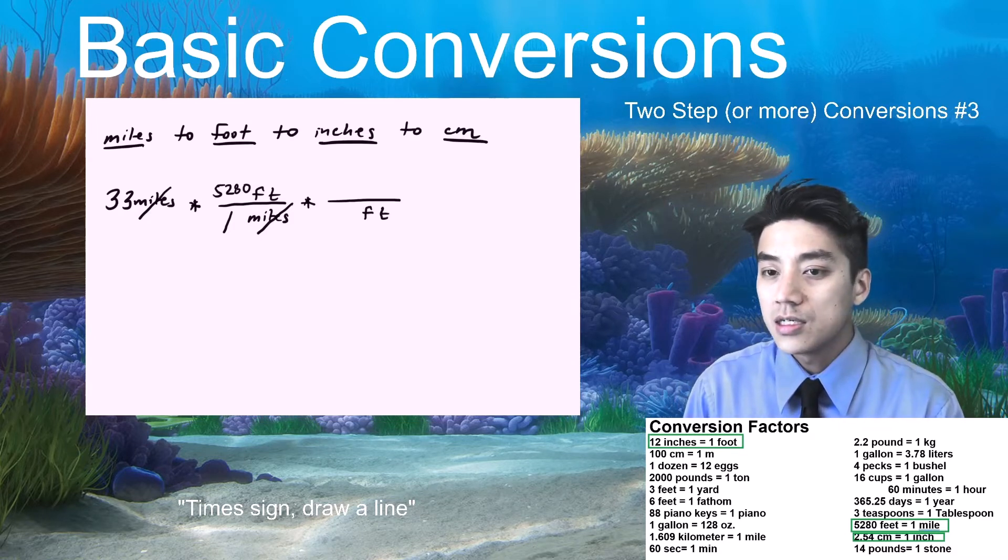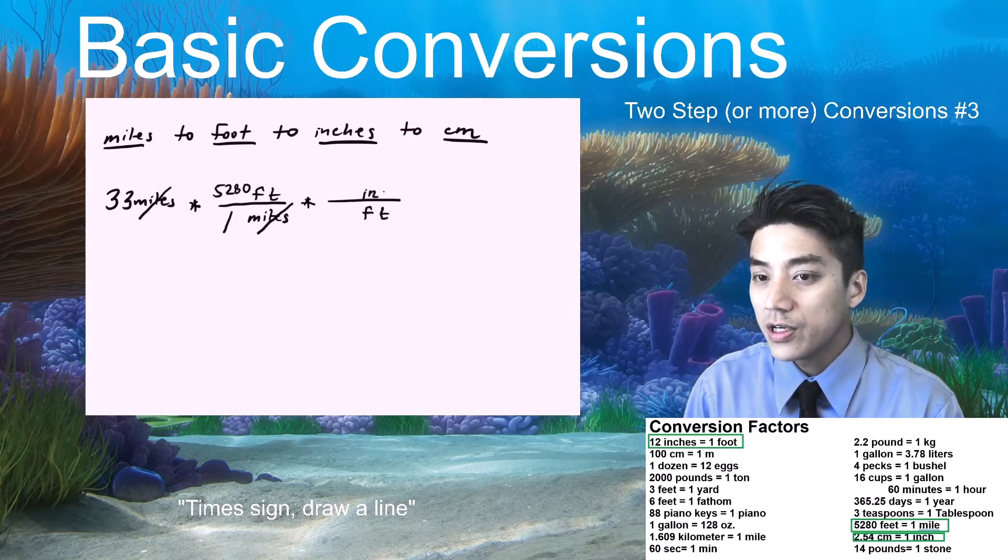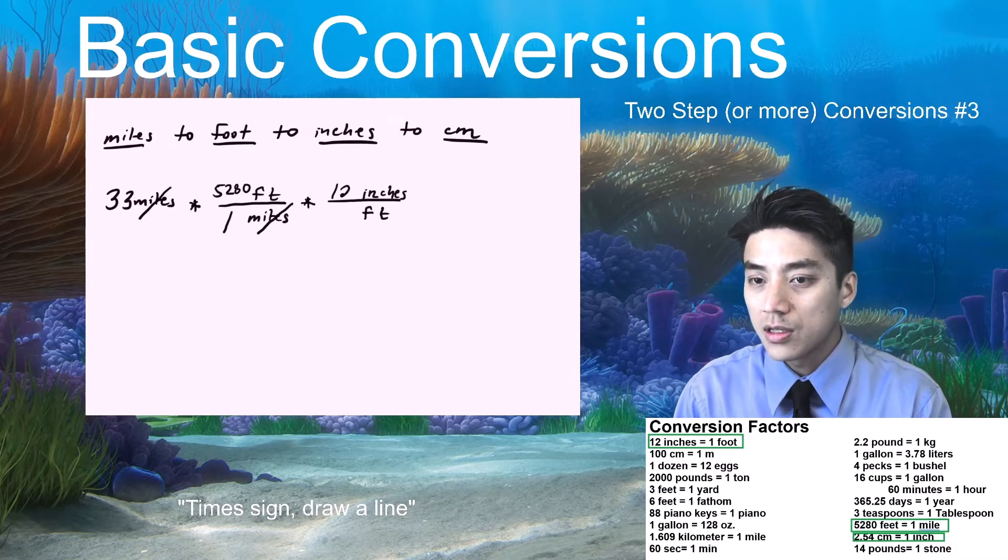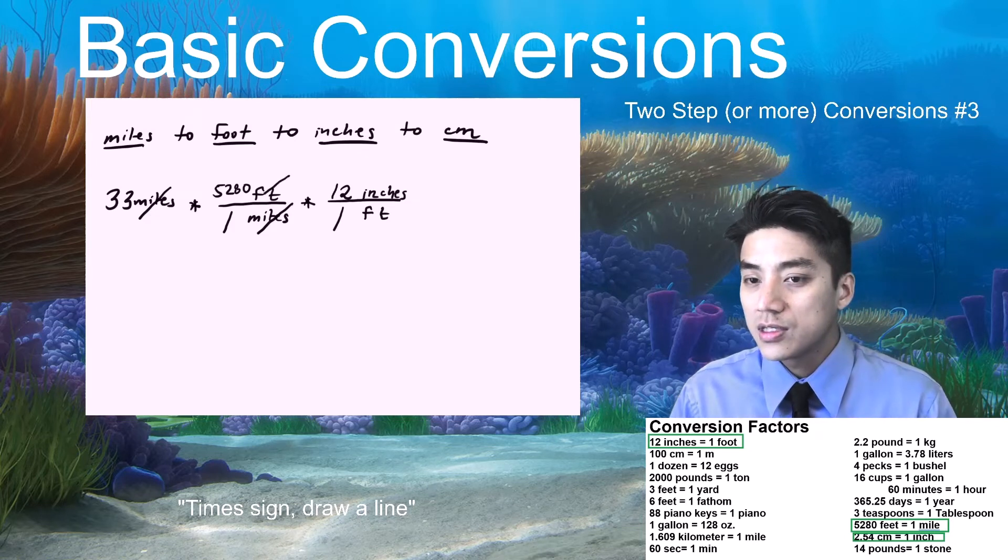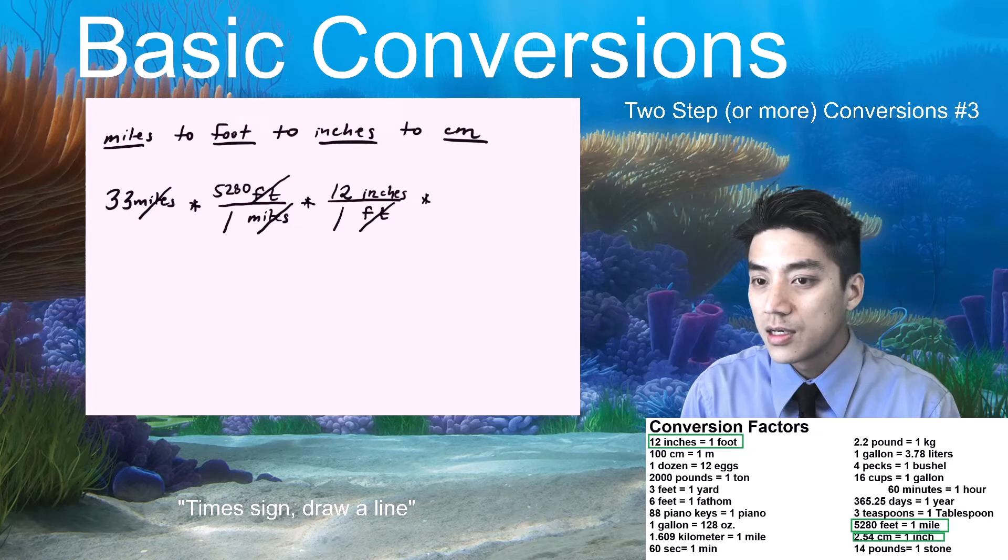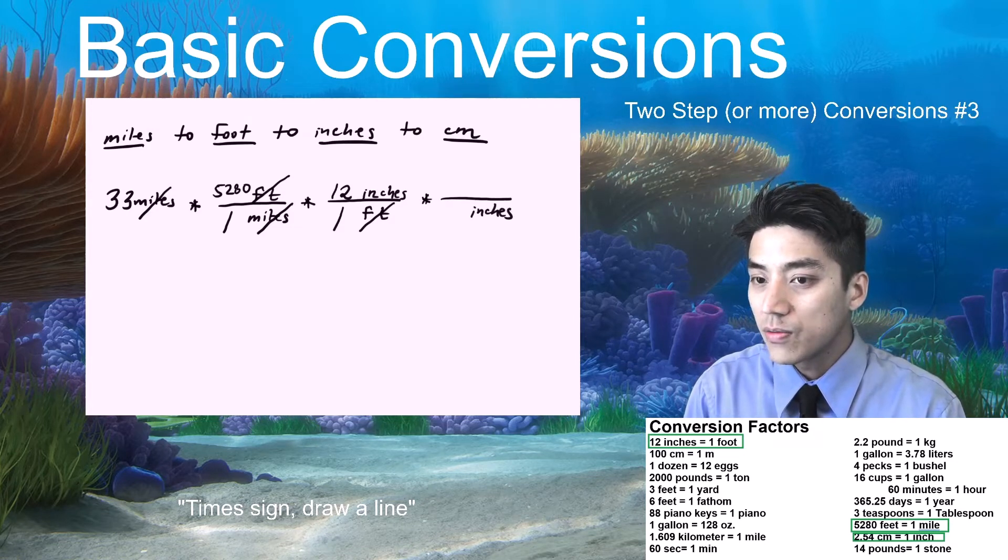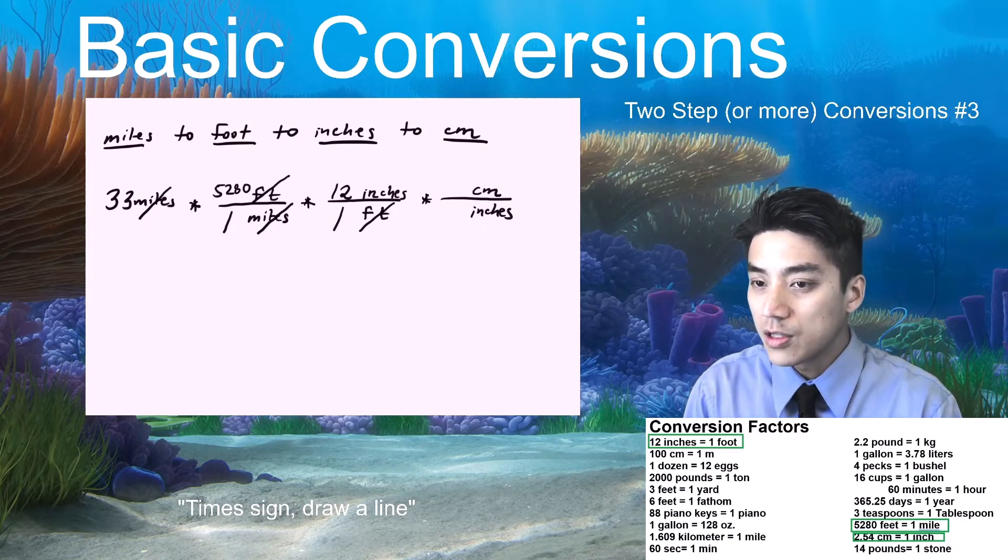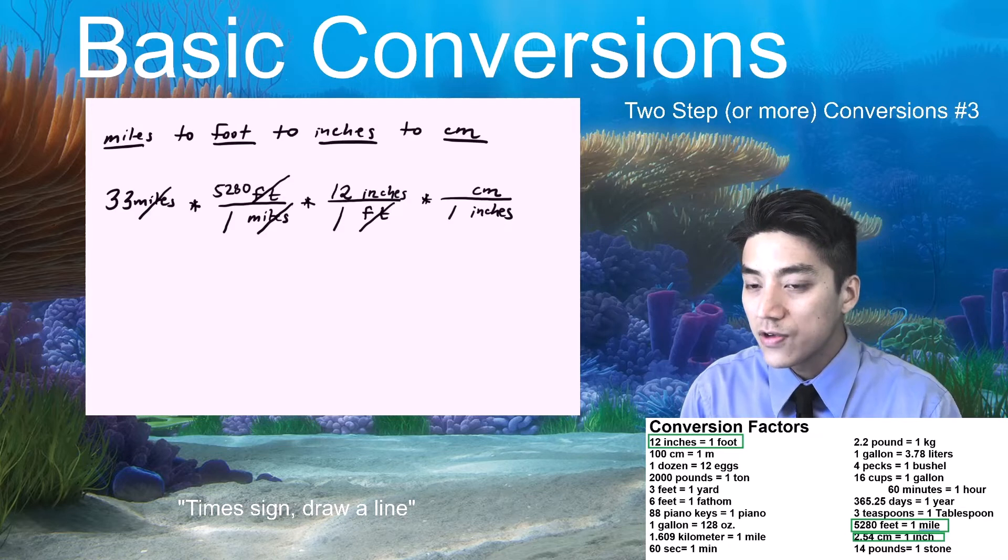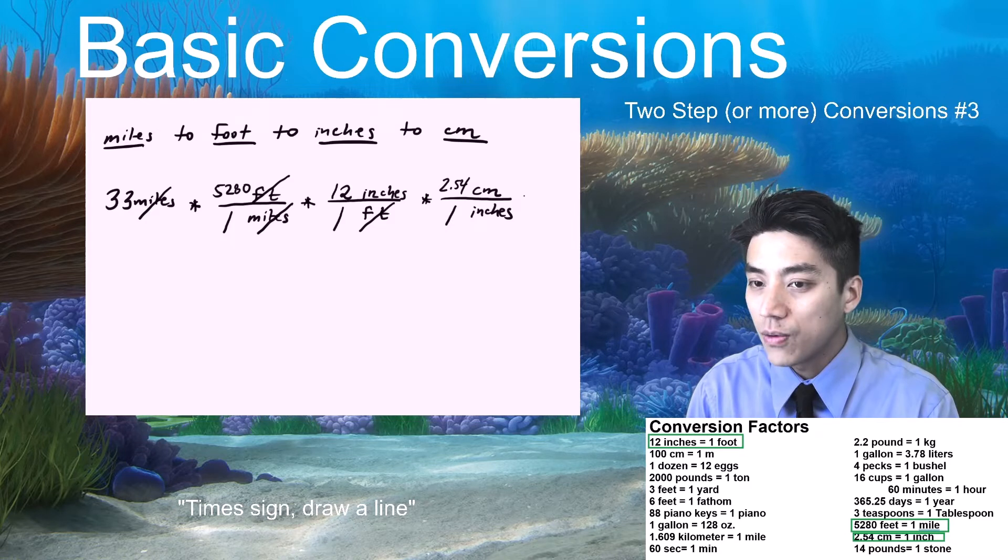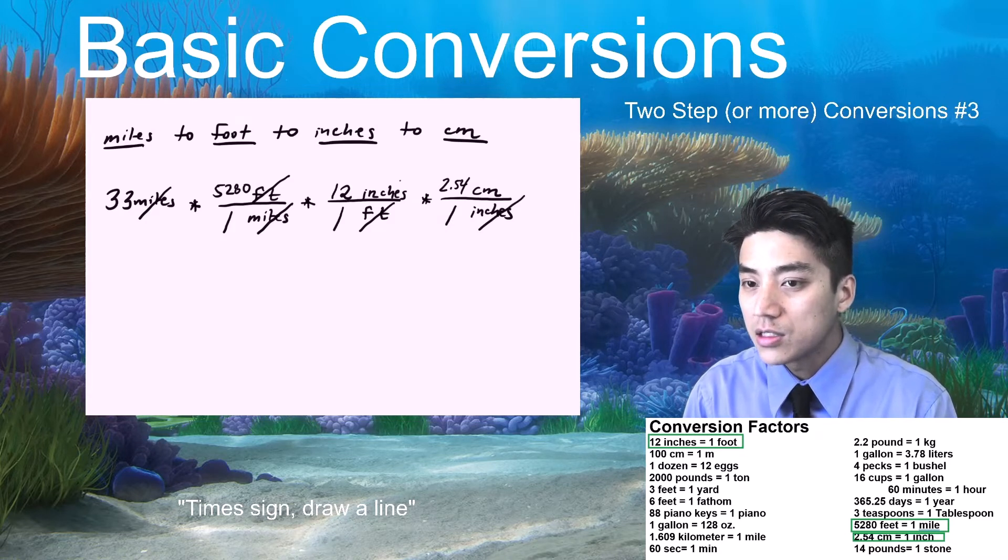Okay, we're going to go from foot to inches. So now I want foot on the bottom so that it cancels. And then inches on top of the line. 12 inches for every 1 foot. That's easy. Okay, now you cancel out foot. Continue on with the problem. Okay, let's go from inches to centimeters. I want inches on the bottom. I want centimeters on top of the line.